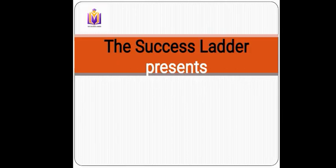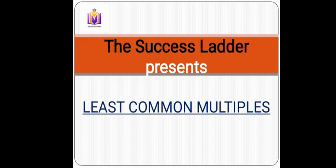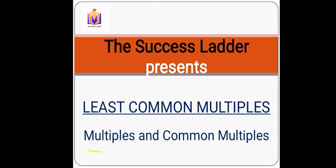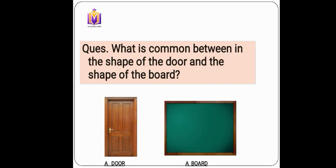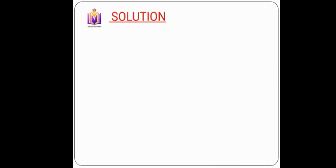Hello everyone, the Success Ladder is here with another video on least common multiples. Today we will see how we can find multiples and common multiples for given numbers. Let's begin. The question is: what is common between the shape of a door and the shape of a board? The first picture is of a door and the second picture is of a board — what is the same in both pictures?